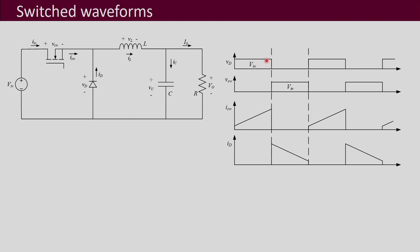What we observe is that all of them are switched waveforms — that means they change abruptly, very quickly. Now these waveforms are drawn for ideal conditions, meaning we did not assume any parasitics for the passive components and for these power electronic devices. We neglected all the non-idealities that these devices have. These waveforms are drawn assuming everything is ideal.